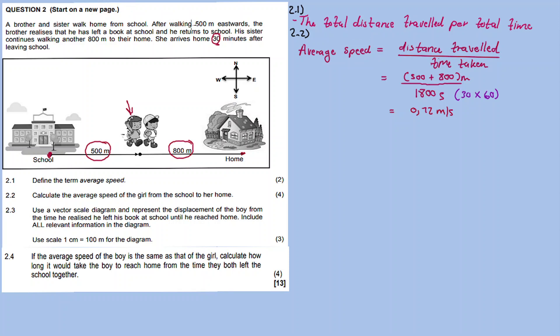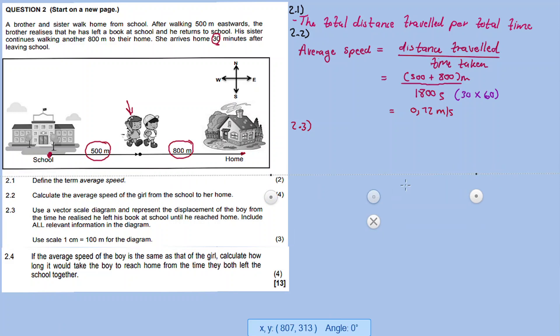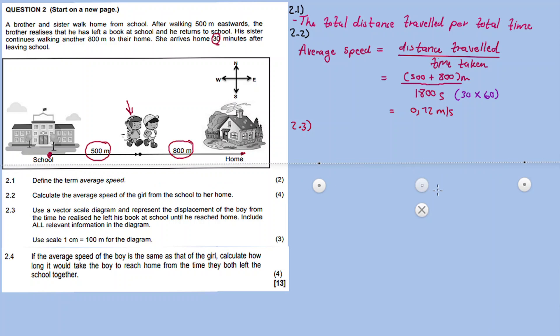Question 2.3: use a vector scale diagram and represent the displacement of the boy from the time he realized he left his book at school until he reached home. Include all relevant information in the diagram. Use the scale: 1 centimeter equals 100 meters. Now, the ruler I'm using doesn't have markings, so it's just lines. When drawing, make sure you draw according to the scale — 1 centimeter represents 100 meters.